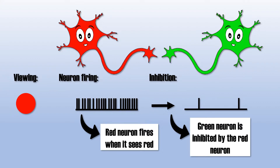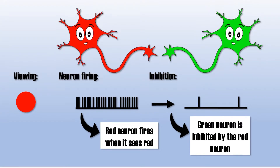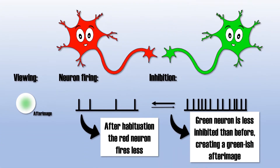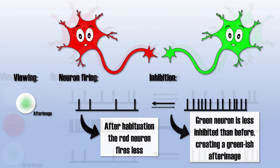After staring at the red color for a while, both excitatory and inhibitory signals become weaker since the brain gets used to the color. If we then change background, the reduced suppression of green neurons now causes those to be dominantly active. And voilà — you will see an after-image.